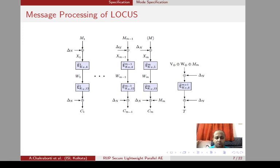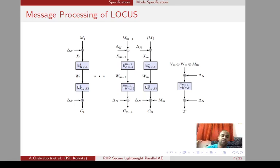The message processing phase of LOCUS has a similar structure to OCB, except again we extract internal state W_i states to compute the W_XOR checksum, and combine it with V_XOR — the checksum from the associated data processing phase — and process it with the last message block in the same manner as LOTUS to generate the final tag. LOCUS and LOTUS differ in the message processing phase from M1 to M_{M-1}; the last block is processed in the same way for both. LOCUS has a total of 13 types of domains, so again we can use 4-bit tweaks to represent all 13 types of domains.